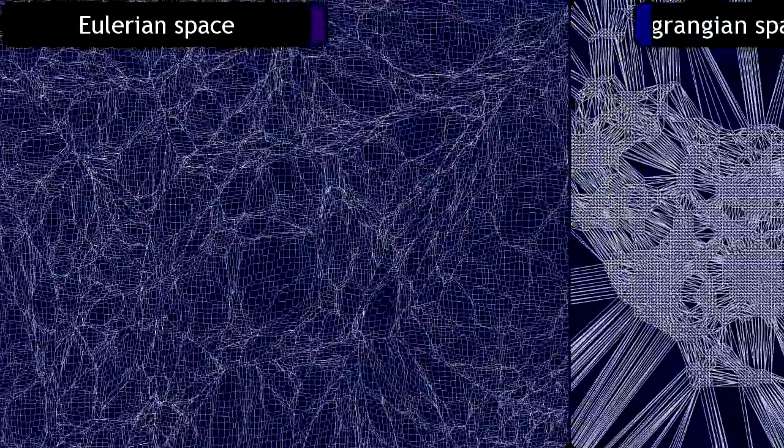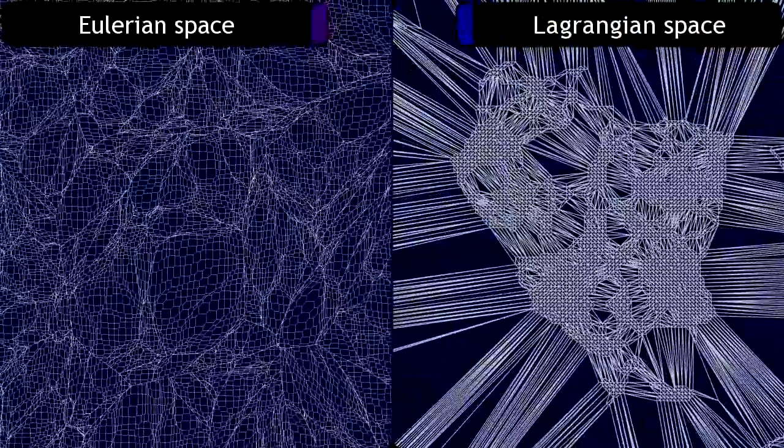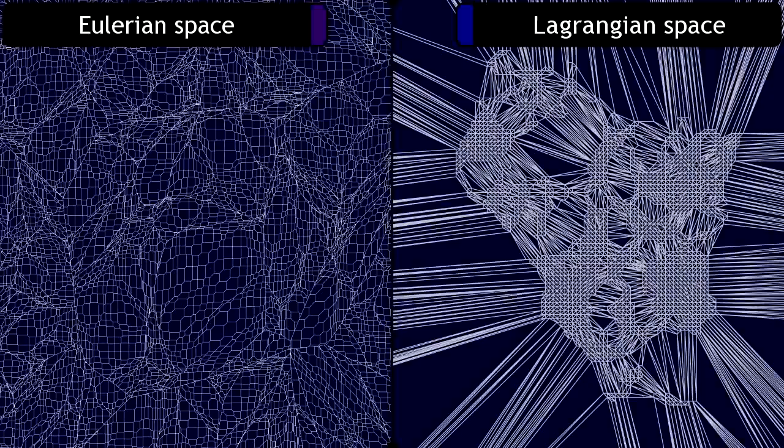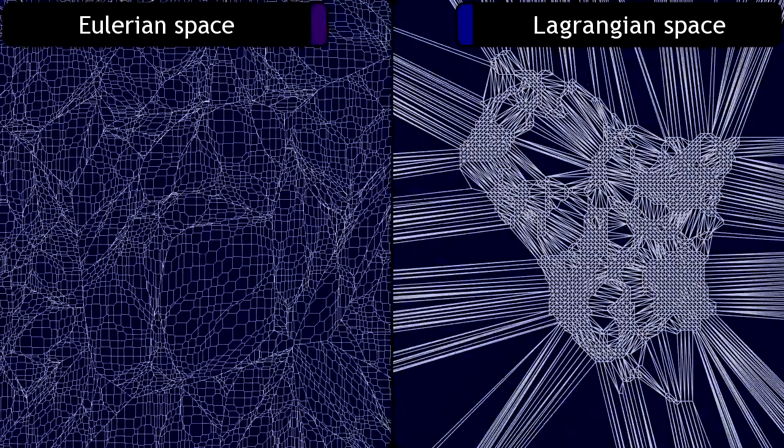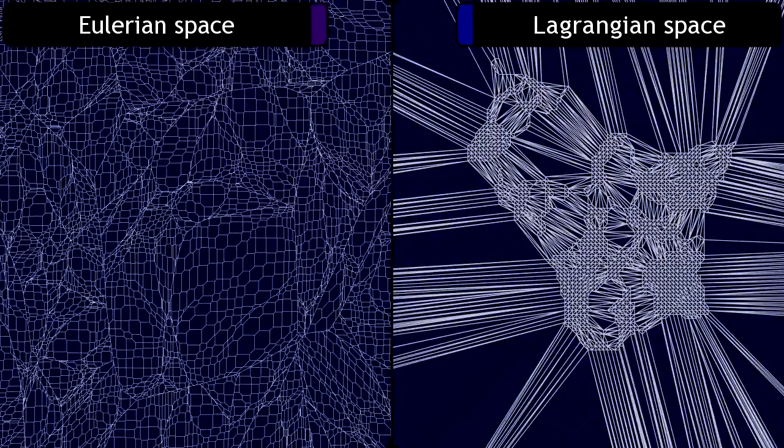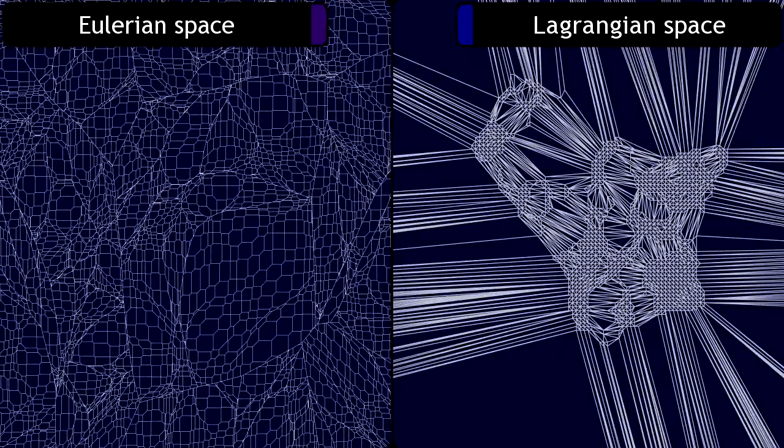Now we are ready to identify elements of the cosmic web by analyzing the corresponding features in the Delaunay triangulation. As a particle trajectory leads into a gravitationally collapsed structure, it becomes redundant, adding mass to the structure. Therefore, the area of a Delaunay face gives the total mass accumulated onto a node in the Voronoi diagram.